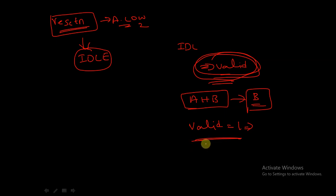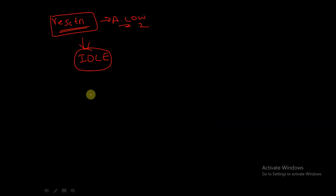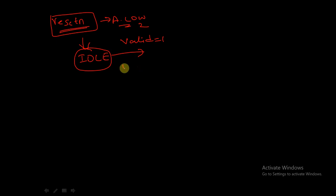The VALID signal will be equal to one when the transfer is either sequential or non-sequential. According to this VALID signal we will decide the state. From the IDLE state, if VALID is equal to one - that is a valid transfer is given by AHB - and if HWRITE is equal to one, indicating a write operation, then the next state would be the WWRITE state.